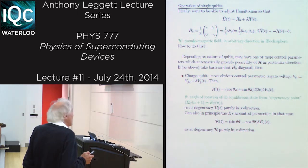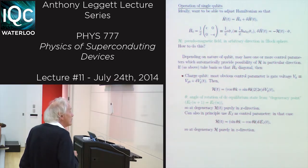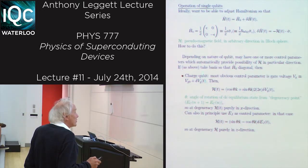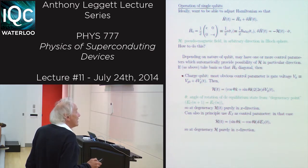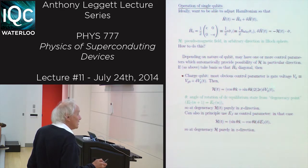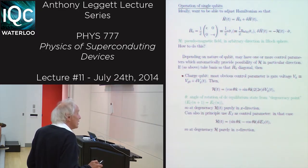Now, that of course is going to depend on the nature of the qubit. You may have one or more control parameters which automatically give you the possibility of providing a pseudomagnetic field in a particular direction. If we take the standard computational basis such that the original Hamiltonian is diagonal, then for a charged qubit, the most obvious control parameter is the gate voltage V. And so our perturbation Hamiltonian in that case is going to be proportional to the gate voltage.